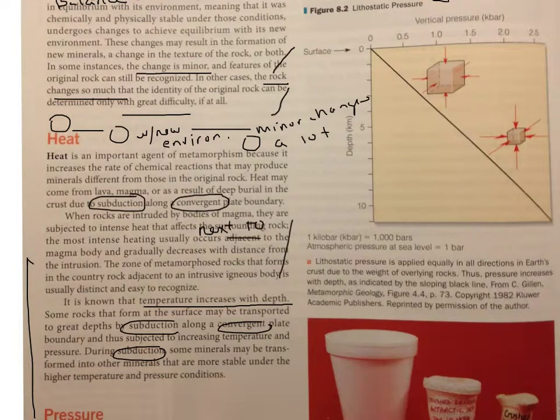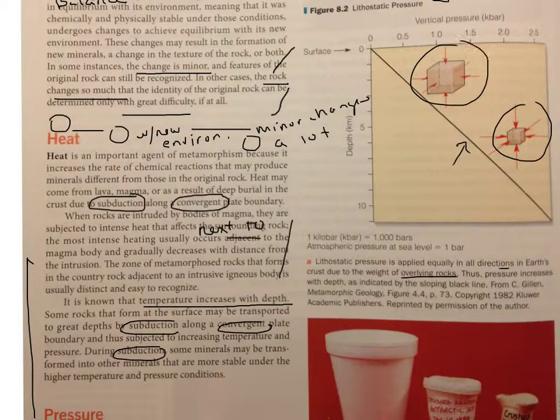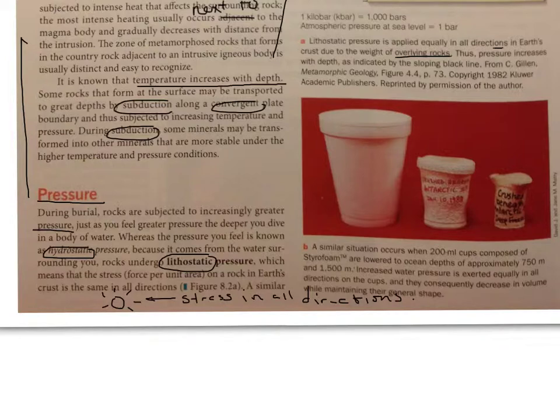I see there's a figure here that demonstrates lithostatic pressure. I'm going to go ahead and read the caption. Lithostatic pressure is applied equally in all directions in the Earth's crust due to the weight of the overlying rocks. That's important. Thus, pressure increases with depth as indicated by the sloping black line. I see that here. I see that these arrows are indicating that the pressure is coming in all directions and that it increases with depth. The image below at the bottom here shows how the water pressure compresses the styrofoam cups and confirms my thinking in my drawing above.